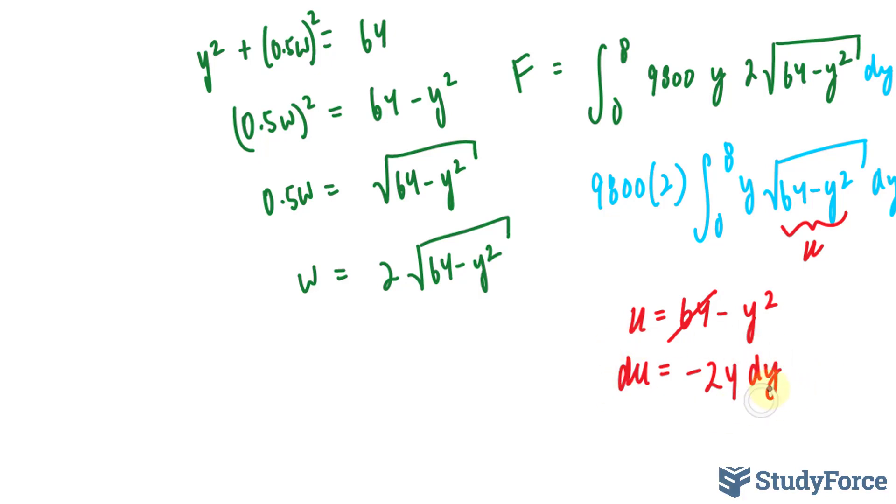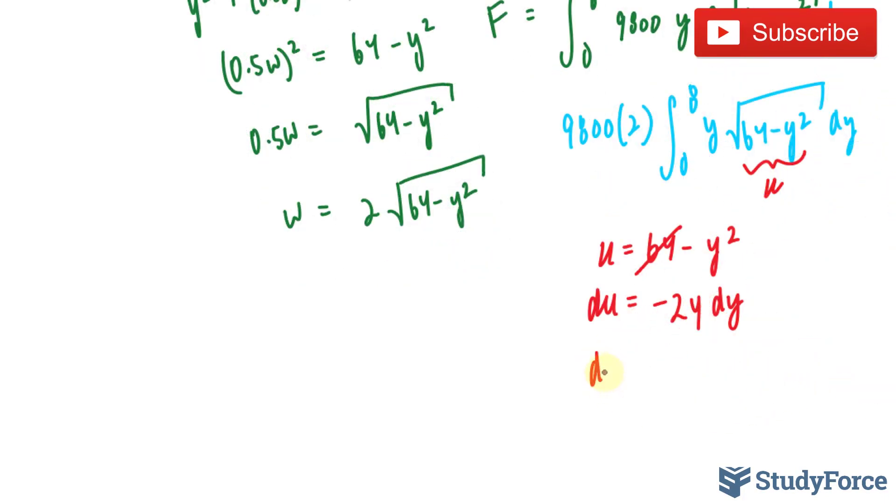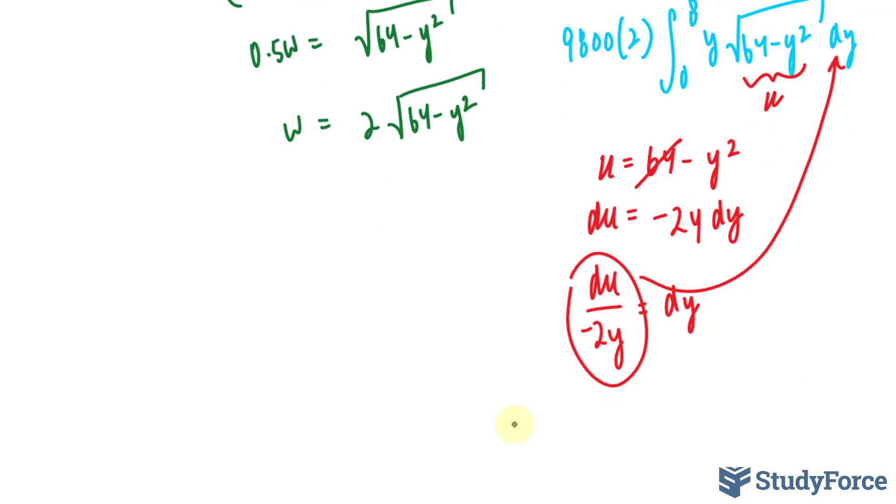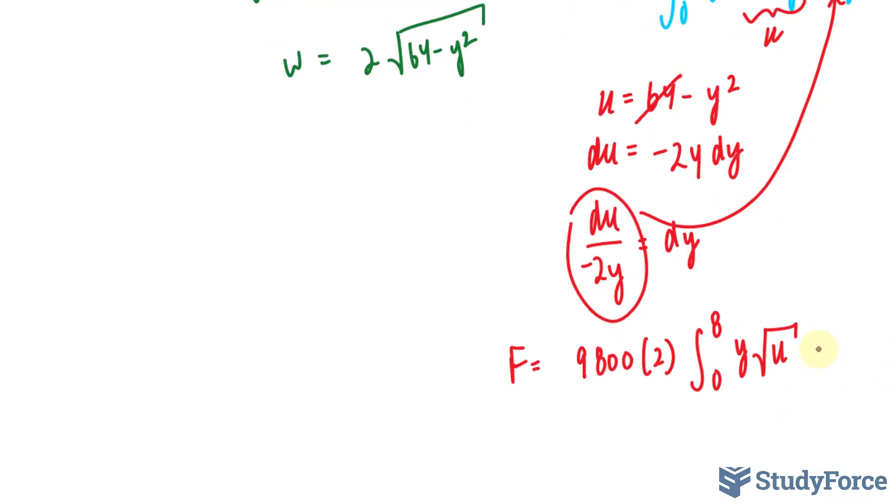I'll need to substitute this into here. So I have du over negative 2y is equal to dy. I'll take this now and place it right here. Look what happens. We end up with force is equal to 9,800 times 2 times the integral between 0 and 8, leaving me with y times the square root of u du over negative 2y. This y cancels out with this y.